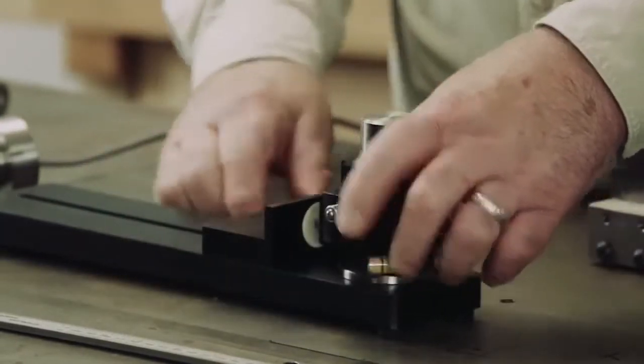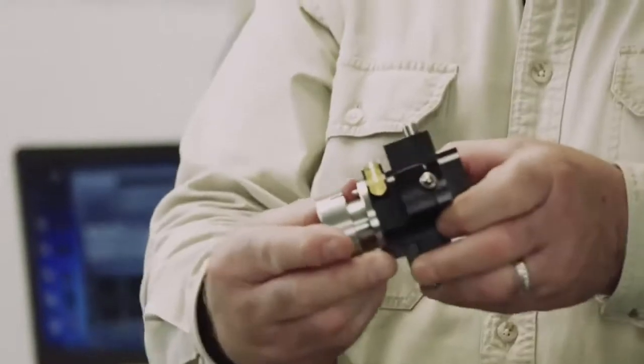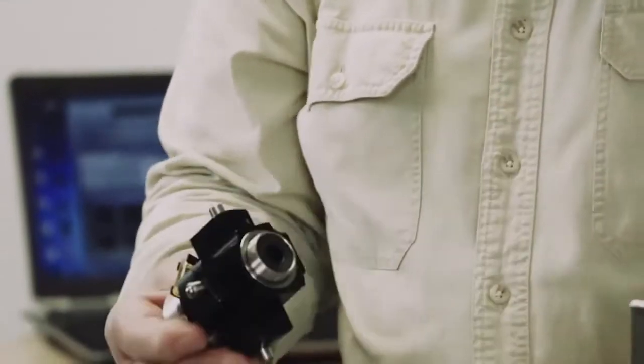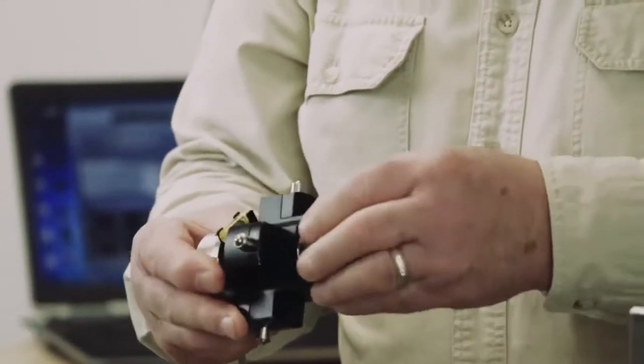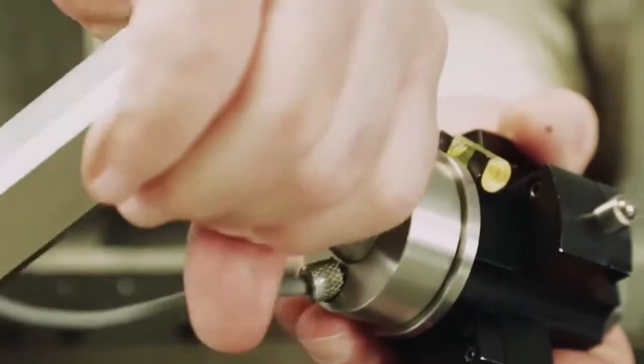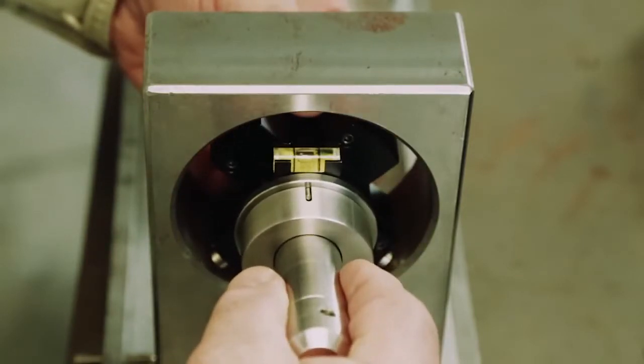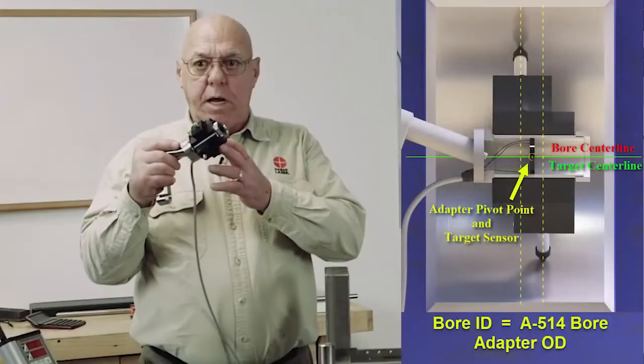I don't want to over-tighten these bolts, but I want them snug. The target goes in here and the dowel pin fits in the slot. Then we screw the handle on the back. This is a weighted handle. Release it and the weight of the handle holds it into the bore. These are self-centering adapters.